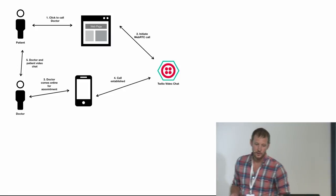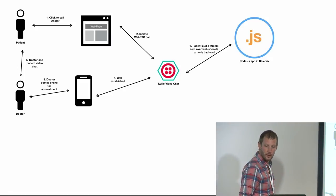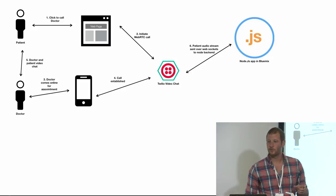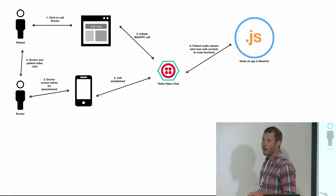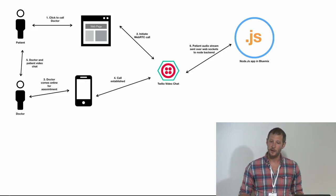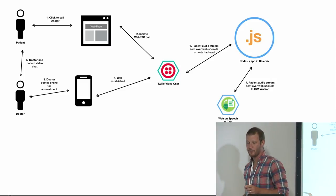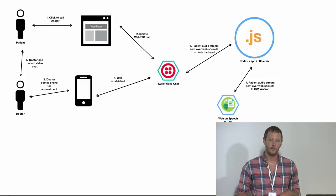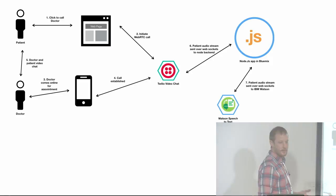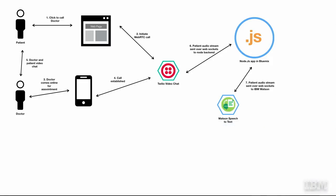This is where it starts getting cool. As they're chatting and the dialogue is going on, the audio stream is streamed from the web browser to a Node backend over WebSockets, and then it streams to the Node backend running in Bluemix. That audio is taken from the Node backend and sent over a REST API to IBM Watson, which takes the audio and transcribes it from the voice stream into text. And Watson will transcribe the audio in real time — real time is the key point here.